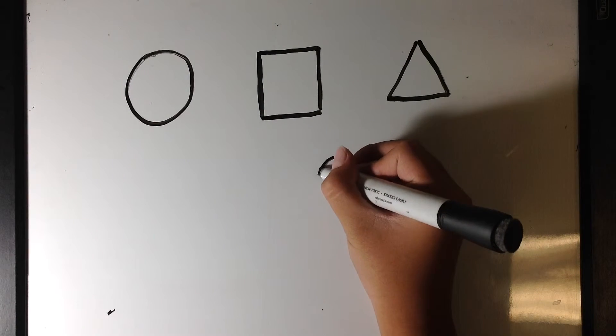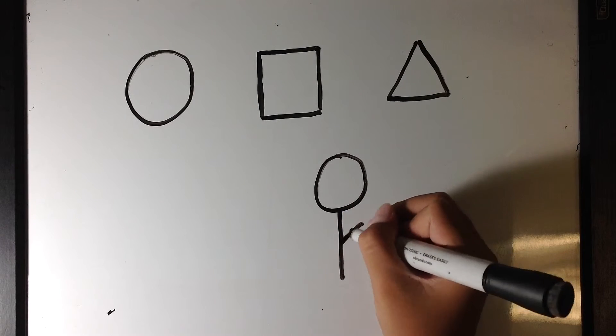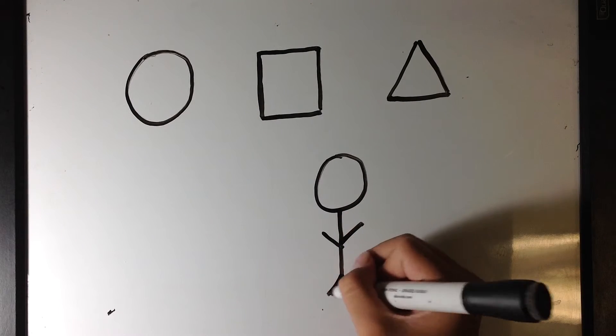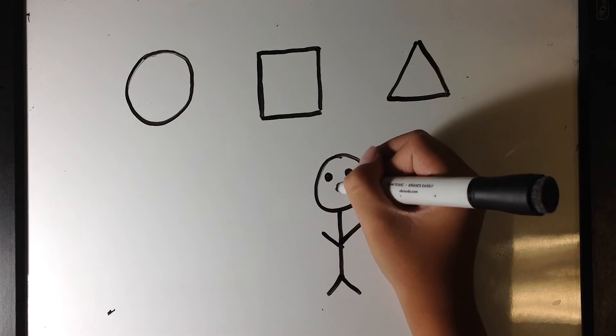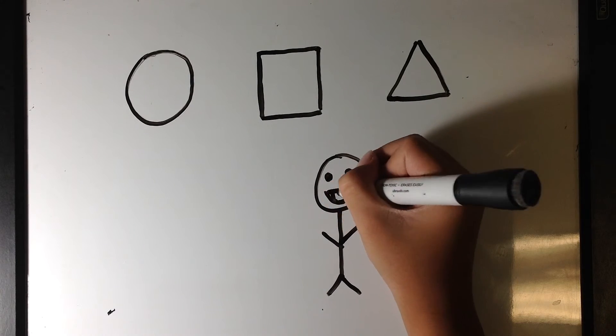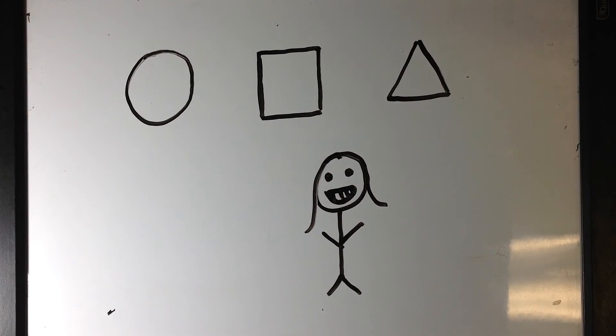First, you start out with a circle, line down, line up, line up, line down, line down. A circle, a circle, line. There you go, it's your mom.